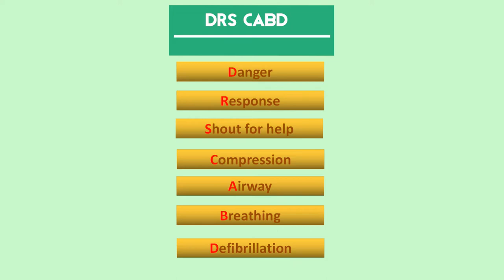Activate the emergency response team and get the automated external defibrillator. C is for compression — commence CPR if necessary. A is for airway — the first responder needs to open the airway passage of the victim. B is for breathing — check if the patient is breathing and provide rescue breathing if necessary. Lastly, D is for defibrillation — use the AED to provide defibrillation if needed.